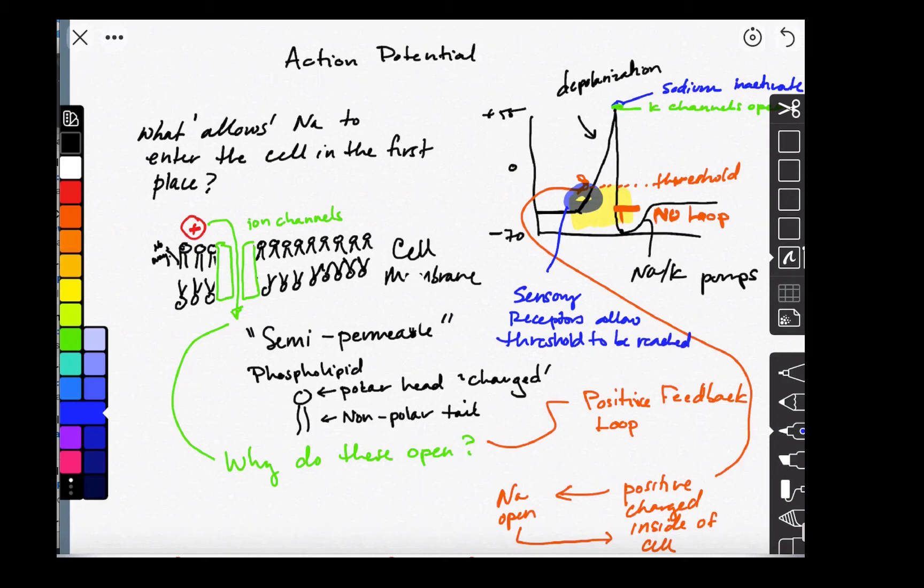Now there is an exception to this, which is vision. And I will talk about why that exception exists. But in general, they allow thresholds to be reached. And that allows that action potential to happen, which is the neural signal.